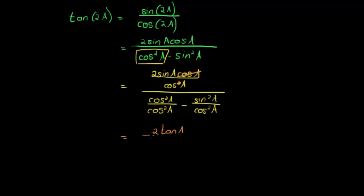In the numerator that is what I get. In the denominator I get 1 because cos squared A divided by cos squared A is 1, minus sine squared A over cos squared A. Now that is the same as saying sine A over cos A squared.